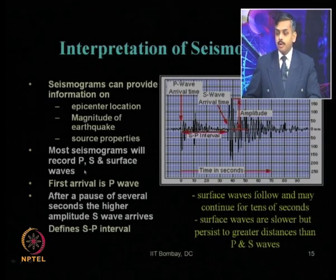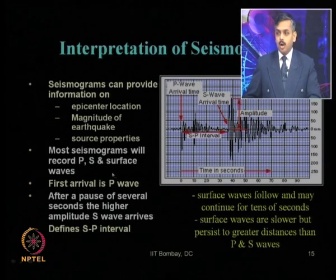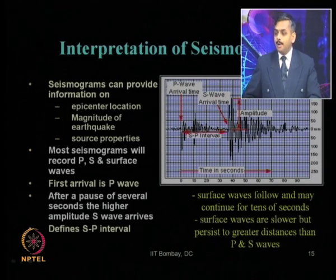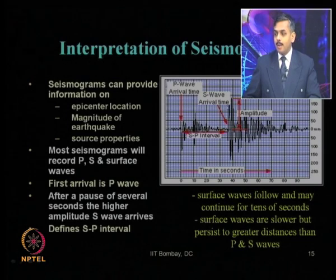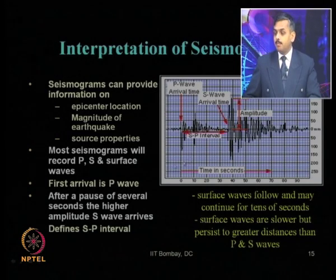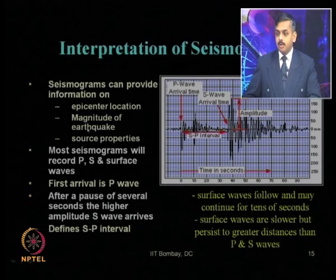The first arrival is the P wave. After a pause of several seconds, the higher-amplitude S wave arrives. The S wave amplitude is much higher than the P wave amplitude, and surface wave amplitude is even higher. The time difference between S and P wave arrival — the S minus P interval — is very useful for obtaining epicentral location and earthquake magnitude. Surface waves follow and may continue for tens of seconds; they are slower but persist to greater distances than P and S waves.